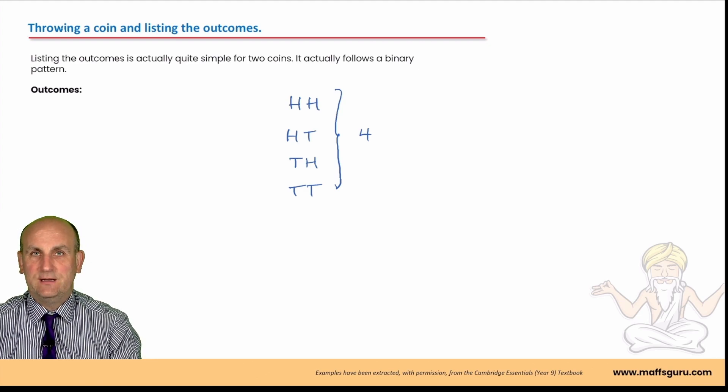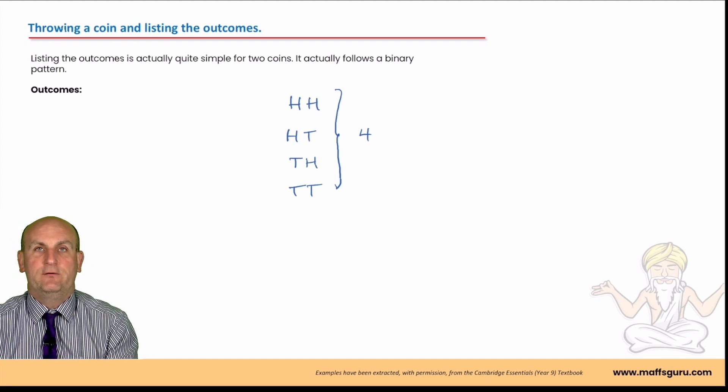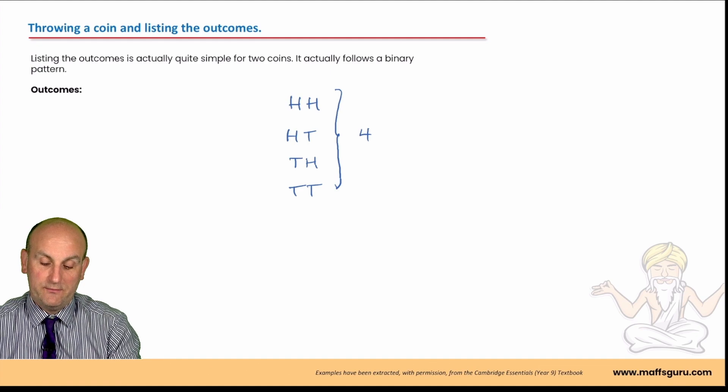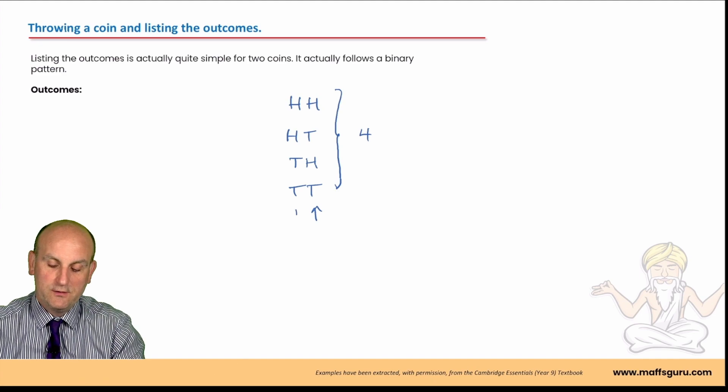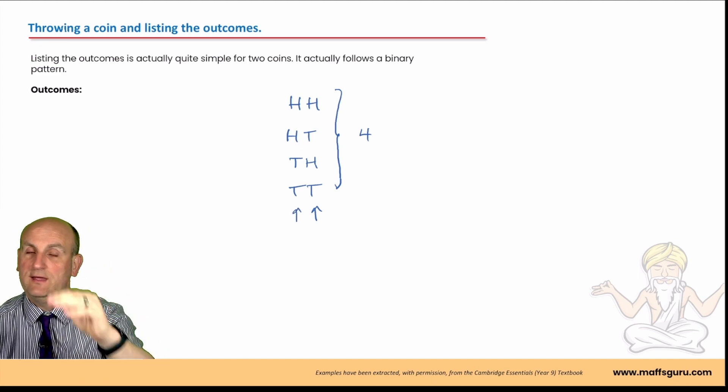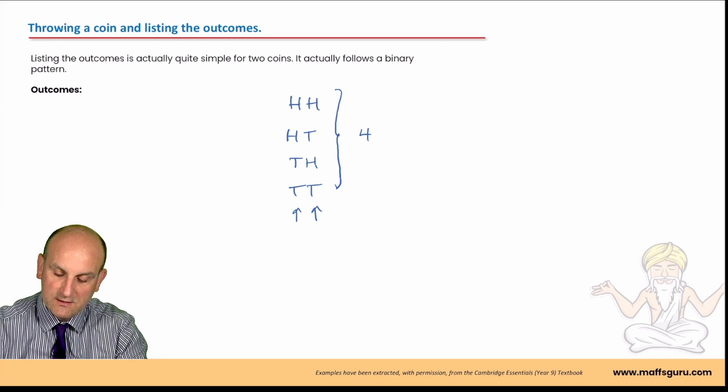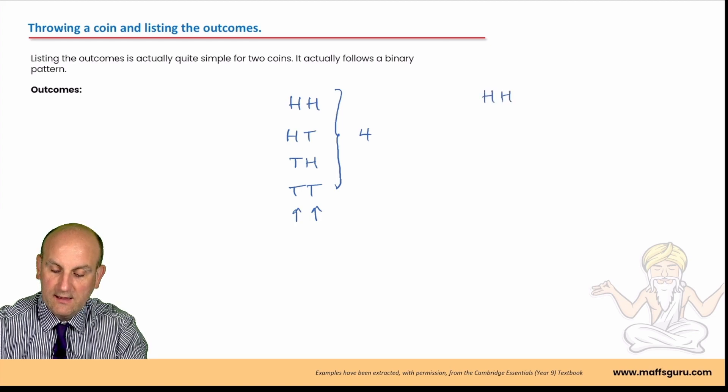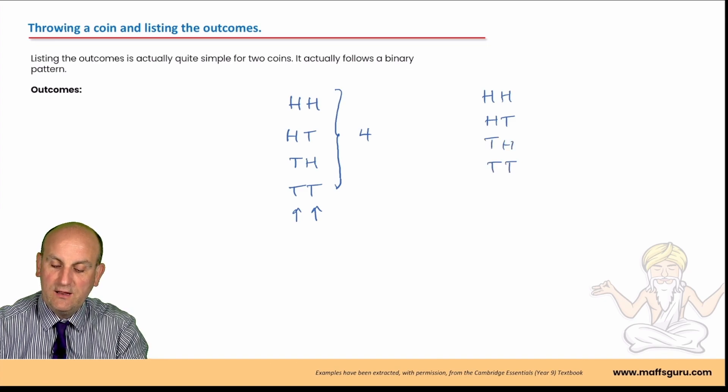And that becomes useful later on when we try and work out how many outcomes there are going to be when we've been given particular information. Now, there is a pattern to be able to write down these type of things and it follows a binary idea because there are two outcomes. If you look at this first column here, it goes head, tail, head, tail. If you look at this column here, it goes head, head, tail, tail.